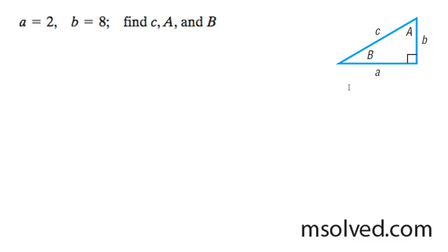I'm solving this triangle. I'm going to label down here so I know side a equals 2, b equals 8, and this angle is 90 degrees.